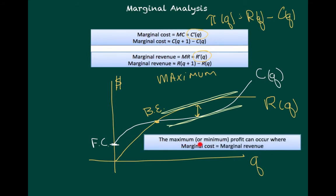The maximum or minimum profit can occur where marginal cost equals marginal revenue. Marginal cost is equal to the derivative of the cost function, which is C'(q). That equals the derivative of the revenue function, which is R'(q). That's essentially marginal analysis. All you really have to do is take the derivative of the cost function, the derivative of the revenue function, and find where they're equal, and that's the quantity that you should make in order to maximize your profit.